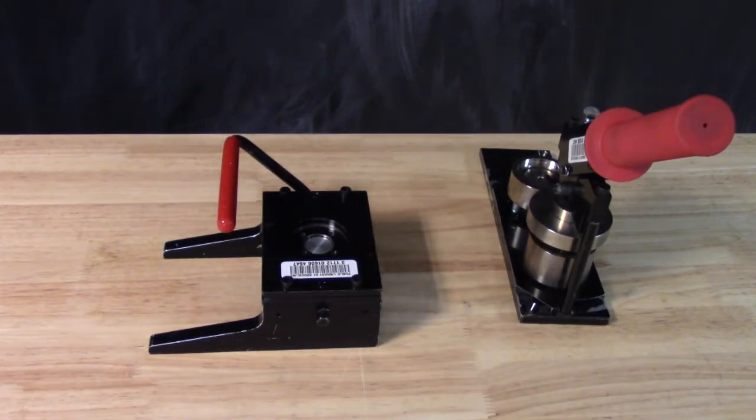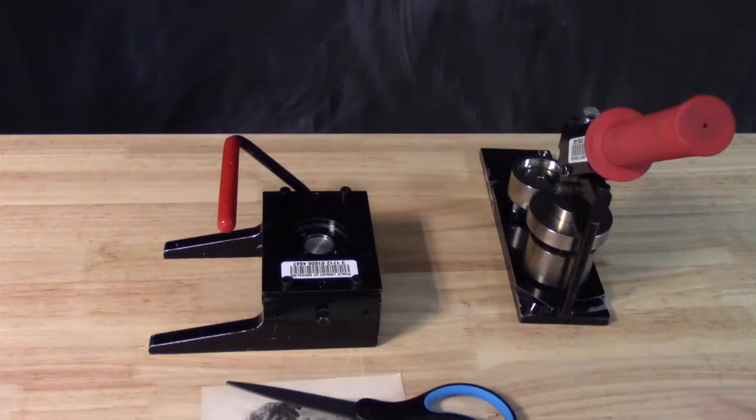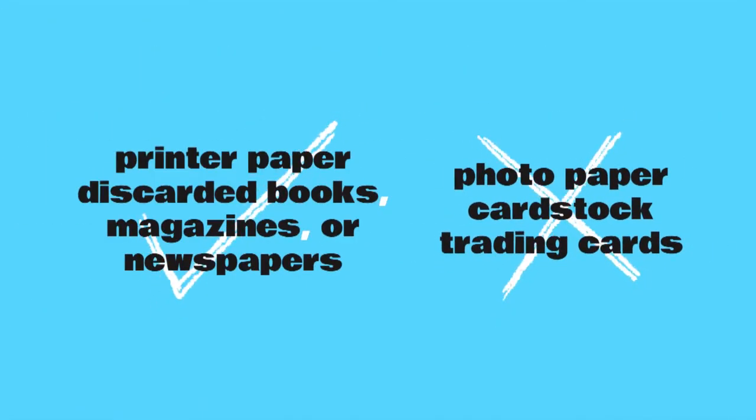Next, grab your scissors and the paper you'd like to turn into a button. I'll be using a page from a damaged book, but you can also use magazines or print your own images. We don't recommend using cardstock or glossy photos because they're usually too thick to seal into the button properly.